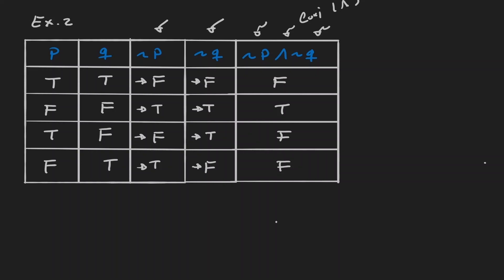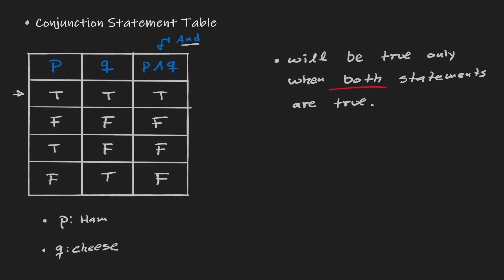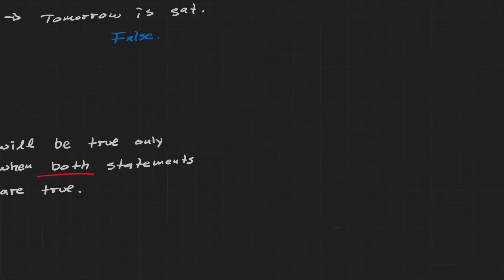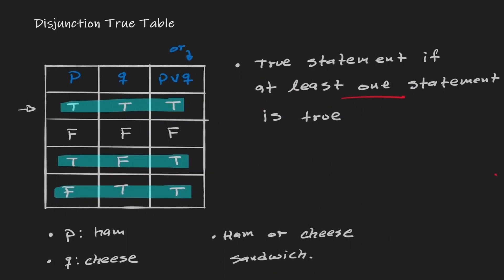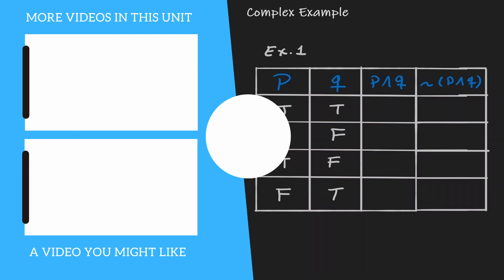Let's summarize: a conjunction statement is only true when both statements are true. A disjunction statement is true when at least one statement is true. And for negation, we write the opposite — if a statement is true, its negation is false, and vice versa. If you'd like to continue learning about mathematics, you can check out the videos on the left.